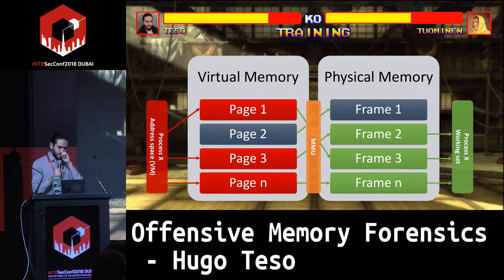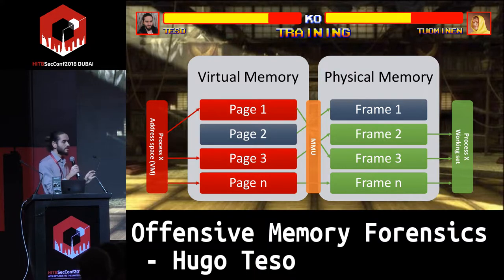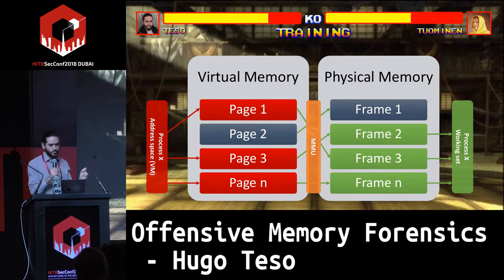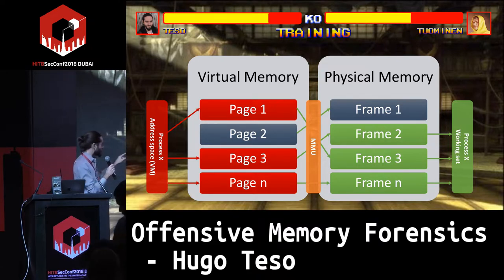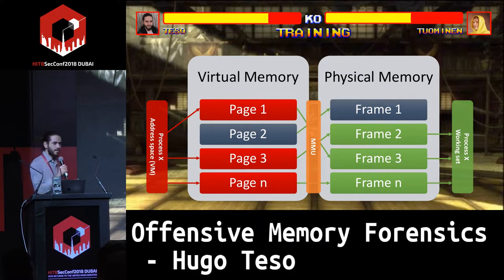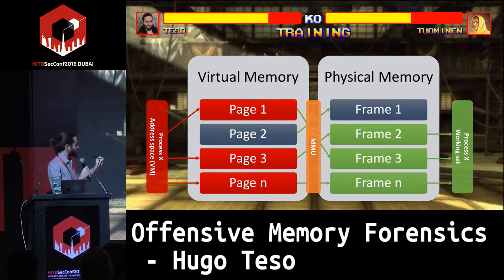This memory is divided in units. Units in virtual memory are called pages, while in physical memory they are called frames — just to differentiate between the two. There is one rule: every single page in virtual memory has one equivalent in physical memory where it's actually stored. But the mapping is not one-to-one — page one doesn't need to be stored on frame one. There is a Memory Management Unit, a tiny component that translates between them.